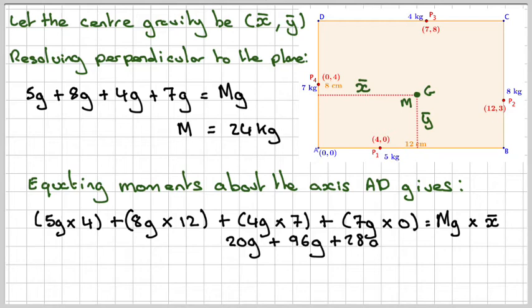So that gives me 20G. Working each of these out. 96G, 28G will be equal to M, which is 24G times the x-coordinate of the centre of gravity. And then the centre of gravity, 144G, will be 24G times x-bar. And therefore, the x-coordinate will be 6.